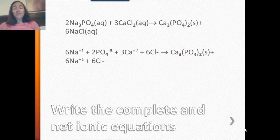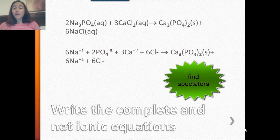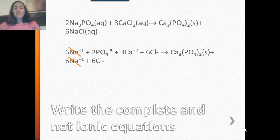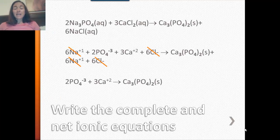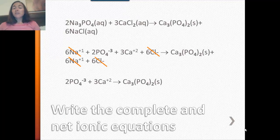Now let's write the net ionic equation. We need to find our spectators — ions that show up on both sides. I see 6 sodium ions on both sides and 6 chloride ions on both sides, so those are the spectators. What's left are the phosphate ions and calcium ions, which form solid calcium phosphate. This is a balanced synthesis equation, so that's a good answer.